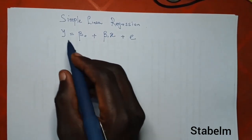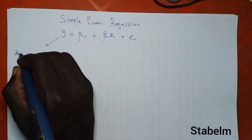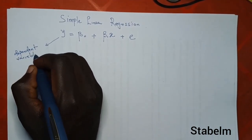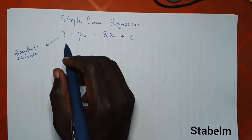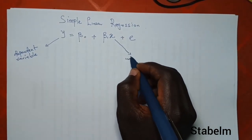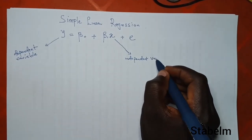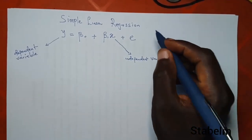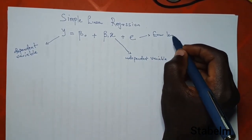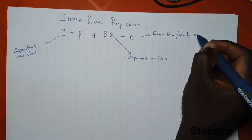Now, if you want to define this: we have y as the dependent variable, and we also have x as the independent variable. Then we have the error term, also called white noise.